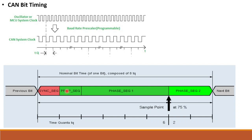The propagation segment and phase segments together have a maximum of eight time quanta. For the sampling point, we target 75%. With a total of eight time quanta, the left side is six time quanta and the right side is two time quanta. Two time quanta represent 25%, giving us the sampling point.